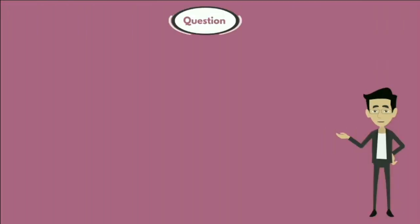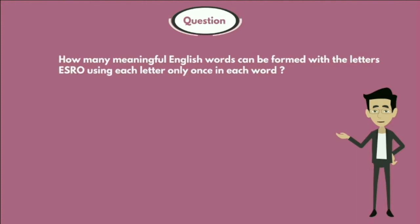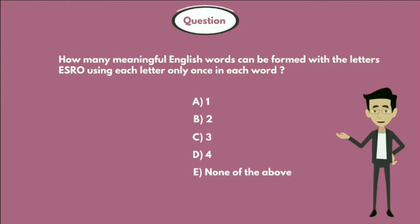Question: How many meaningful English words can be formed with the letters E, S, R, O, using each letter only once in each word? Options are: Option A - 1, Option B - 2, Option C - 3, Option D - 4, and Option E - none of the above.